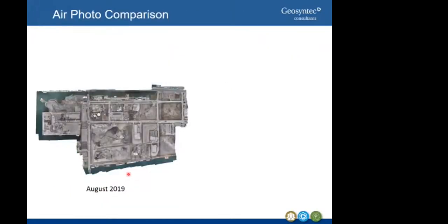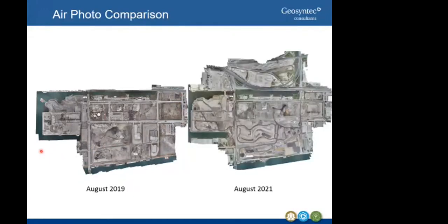Starting in August 2019, you can see the main channel taking shape — about three to five months into the excavation. Most of the soil excavated was disposed of off-site, and roadways like Cherry Street, Commissioners, and Don Roadway were still active. Many of the tenants were still in place and you can see some of the existing buildings that were later demolished. The Cherry Street Lake Filling site is just about complete, and there hasn't been much activity in many other areas.